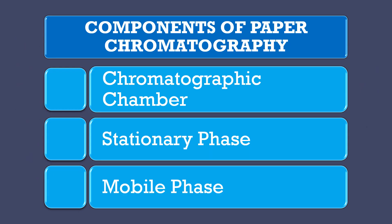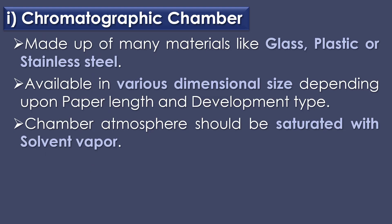Paper chromatography has three components. The first component is the chromatographic chamber. Chromatographic chambers are made up of many materials like glass, plastics, or stainless steel, and usually glass tanks are preferably used. Chromatographic chambers are available in various dimensional sizes depending upon the paper length and development type.